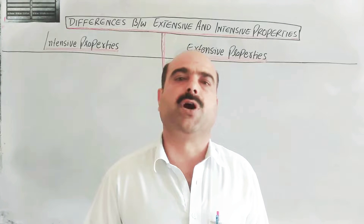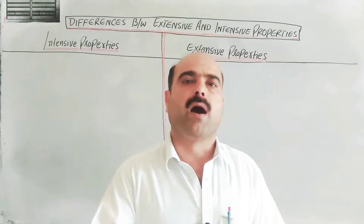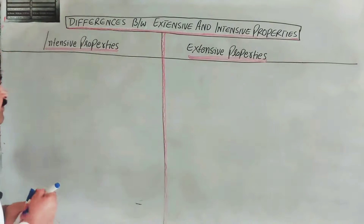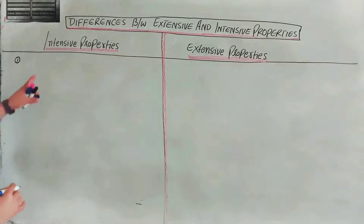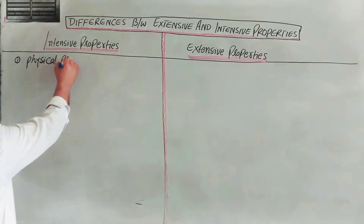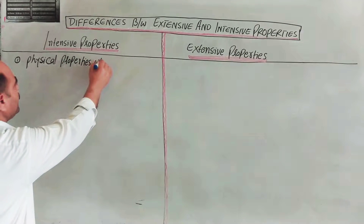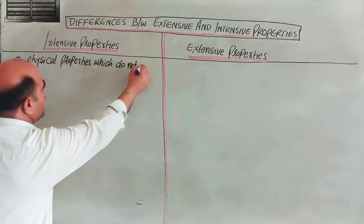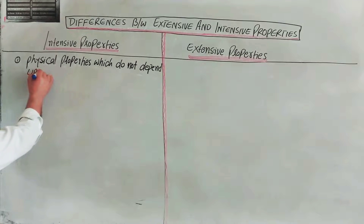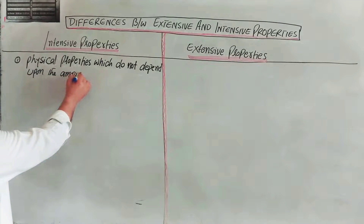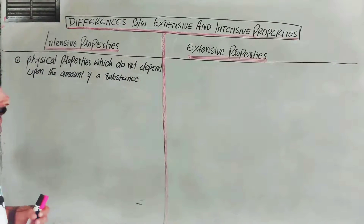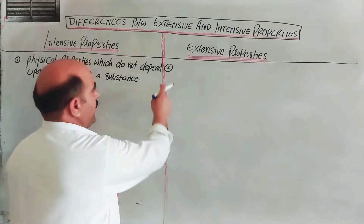The examples we study are heat capacity, specific heat capacity, and molar heat capacity. These are the properties. How the examples are studied, intensive properties on one side and extensive properties on the other. Intensive properties are physical properties which do not depend upon the amount of substance.